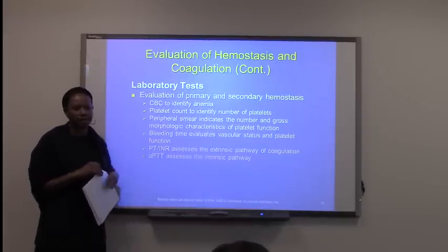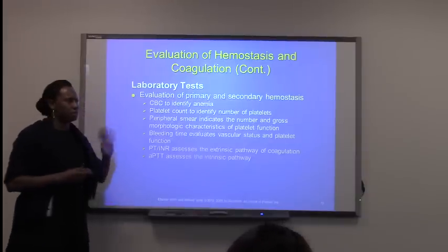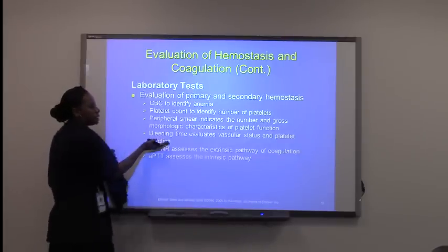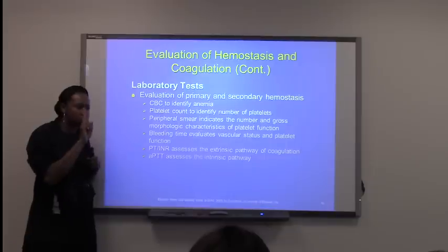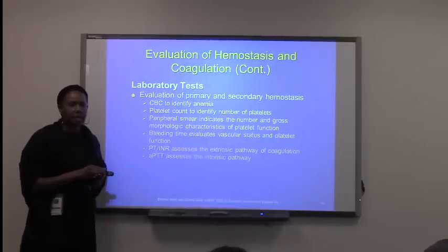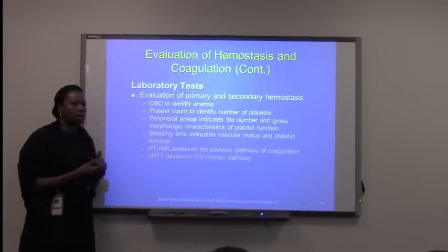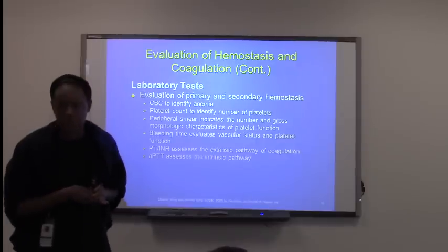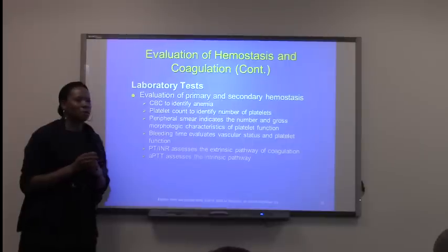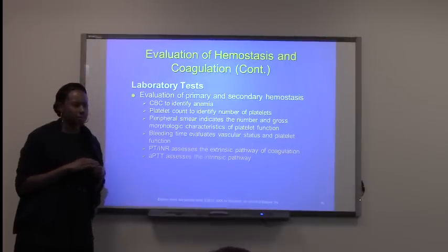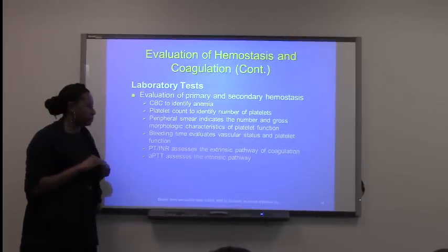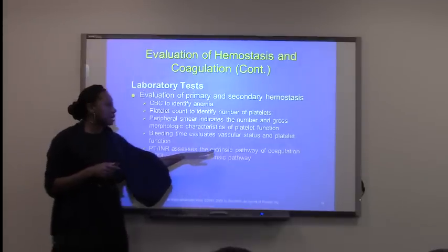You cannot say a person has hemophilia just from their bleeding time — it only tests two things. PT/INR stands for prothrombin time and international normalized ratio. This assesses the extrinsic pathway, meaning outside of the vessel, and identifies issues with the coagulation factors involved in that pathway.